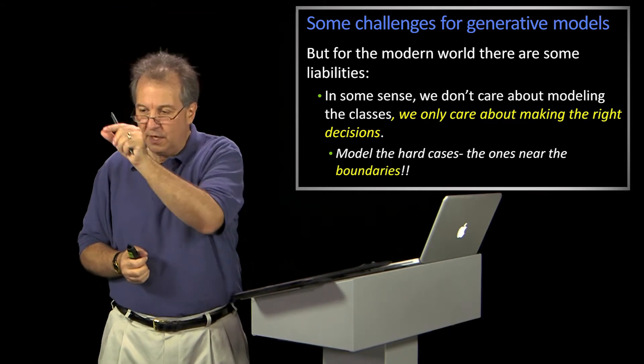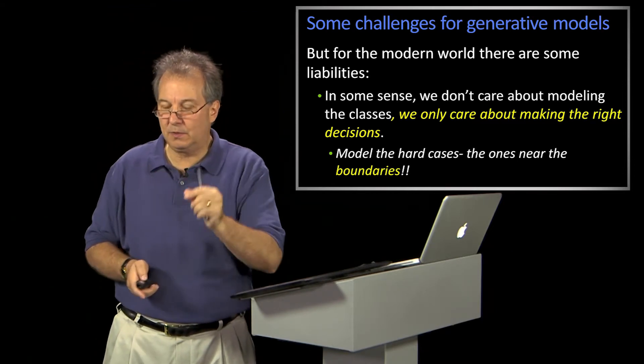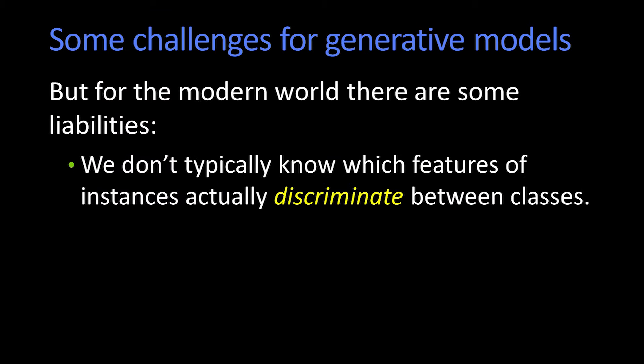What I care about is find me the pixels that may be labeled as skin or maybe not. And finally, I'm going to give you a feature vector or a bunch of features that describe an instance. And we might not have any idea, a priori, which features actually are good for discriminating between the classes.